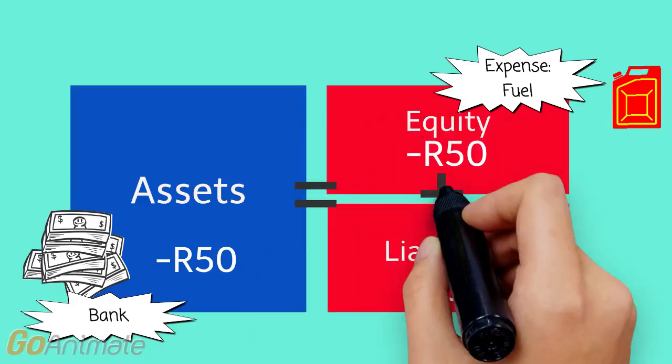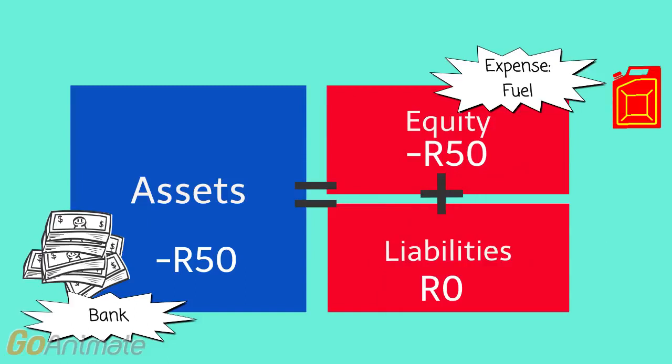So we see that assets — the bank balance — has decreased by 50 rand, and equity has decreased by 50 rand because we had a fuel expense of 50 rand. So the blue and red blocks are equal.